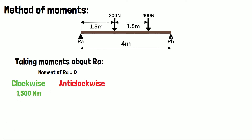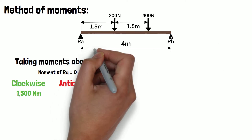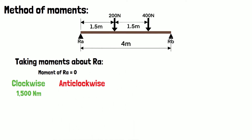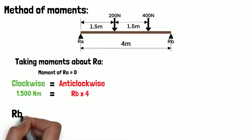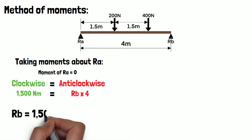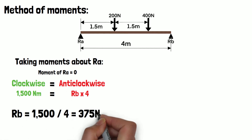The only anti-clockwise moment we have is the support reaction RB at a distance of 4 meters. Since the beam is in equilibrium the clockwise moments must be equal to the anti-clockwise moments. Therefore we can transpose this to find RB by dividing 1500 by 4, which gives us 375 newtons.